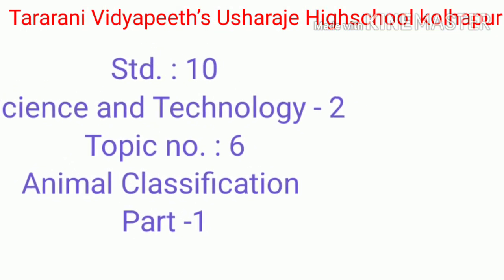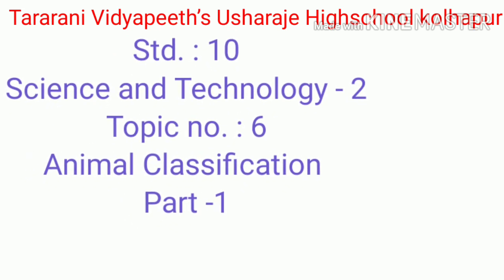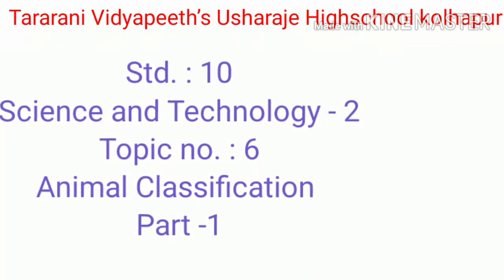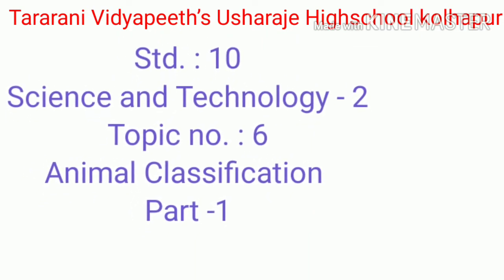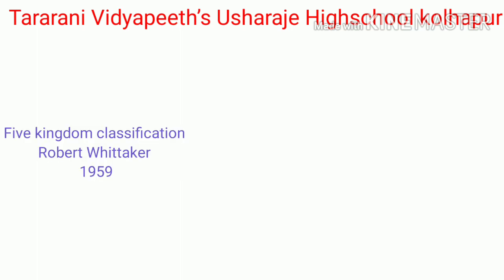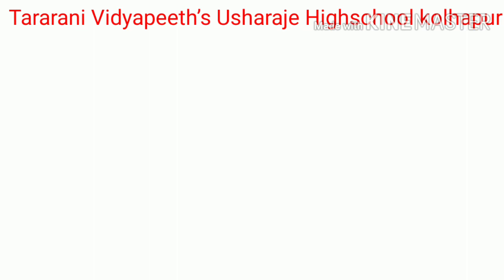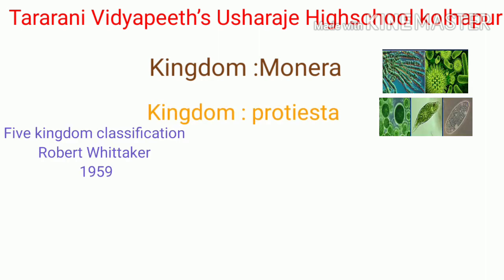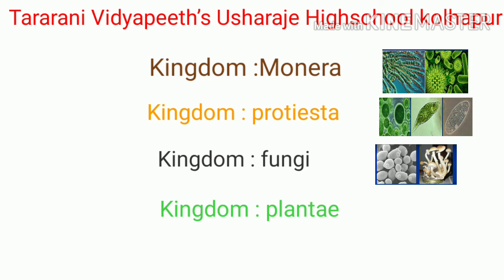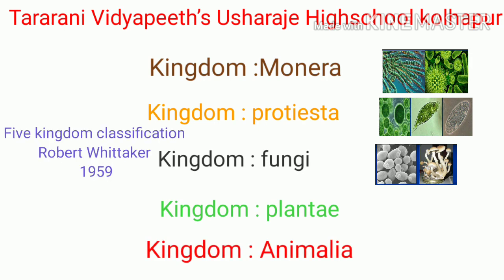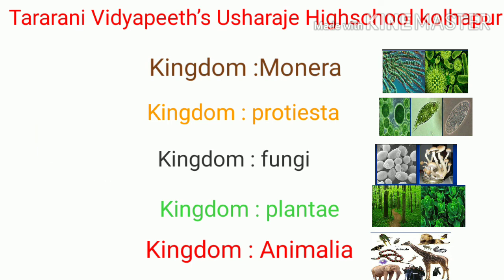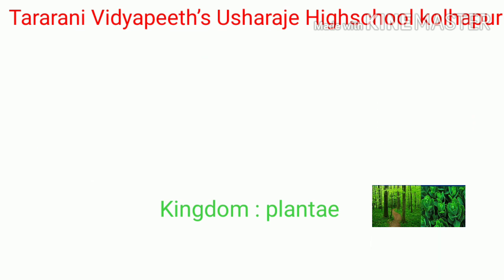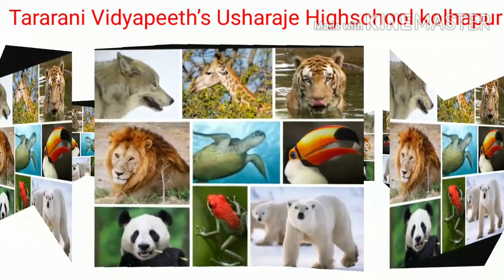Hello friends, in this part we are going to study about standard 10th science and technology part two, topic number six: animal classification. The variety of organisms we see in nature follows the five kingdom classification discovered by scientist Robert Whittaker in 1959. Whittaker categorized all organisms into five kingdoms: Monera, Protista, Fungi, Plantae, and Animalia.